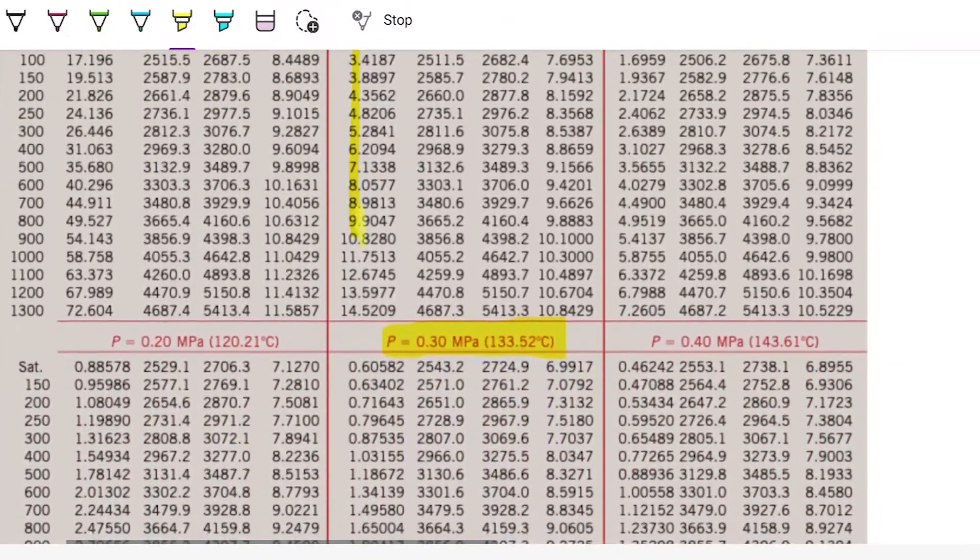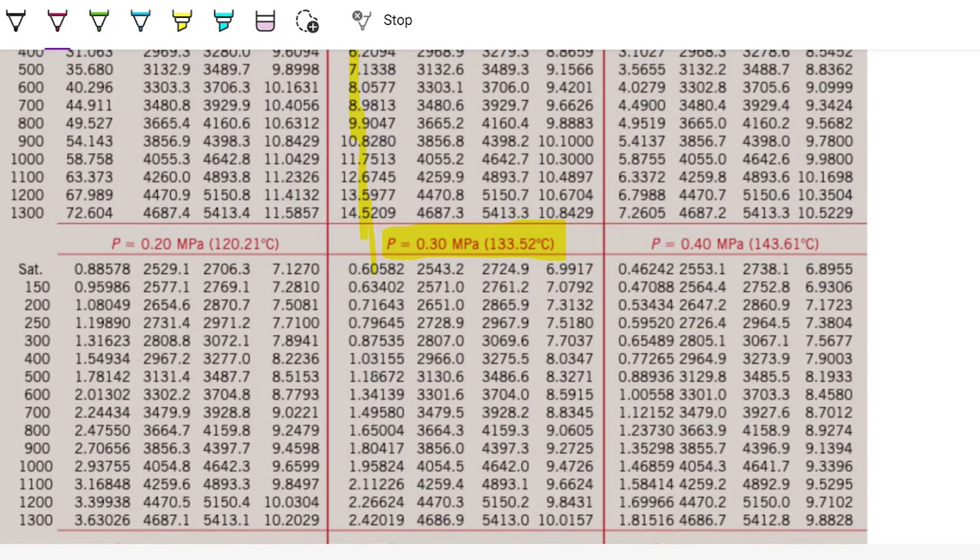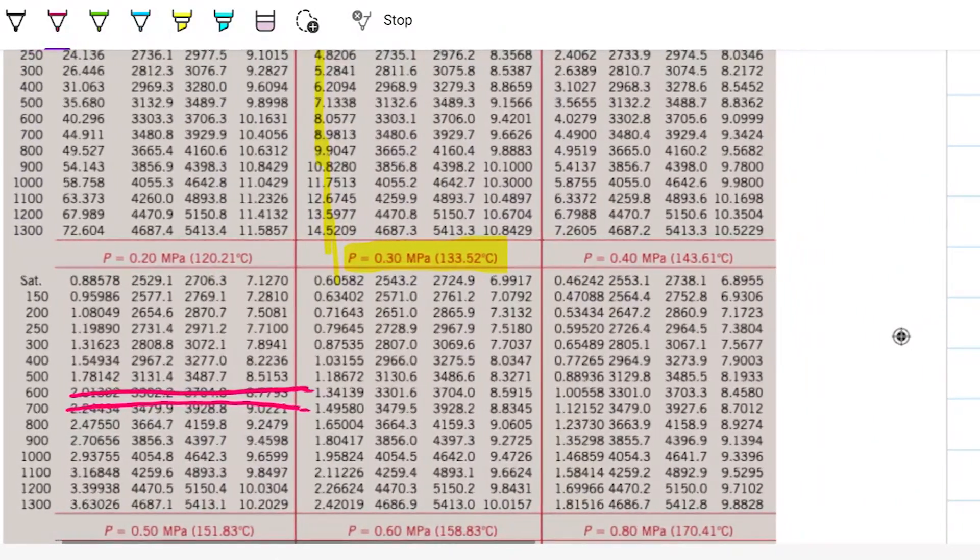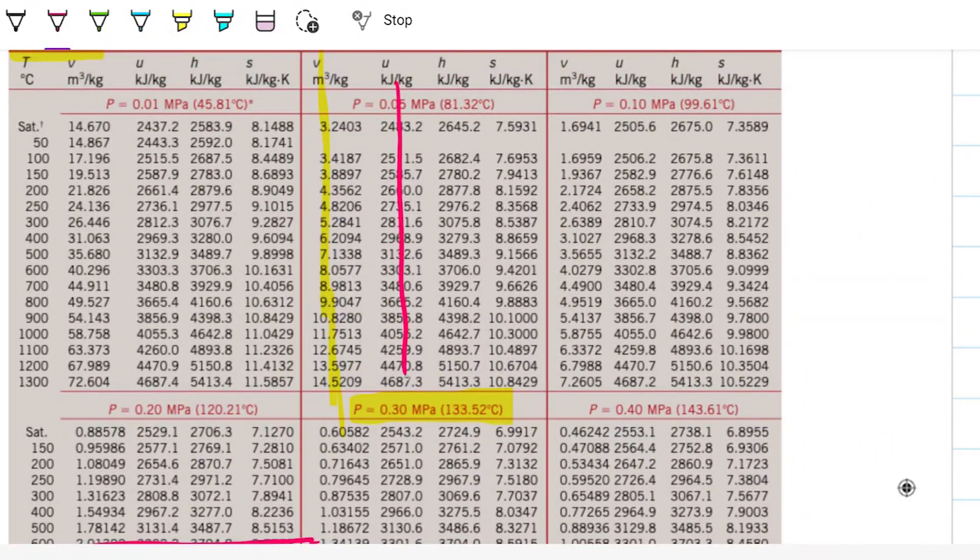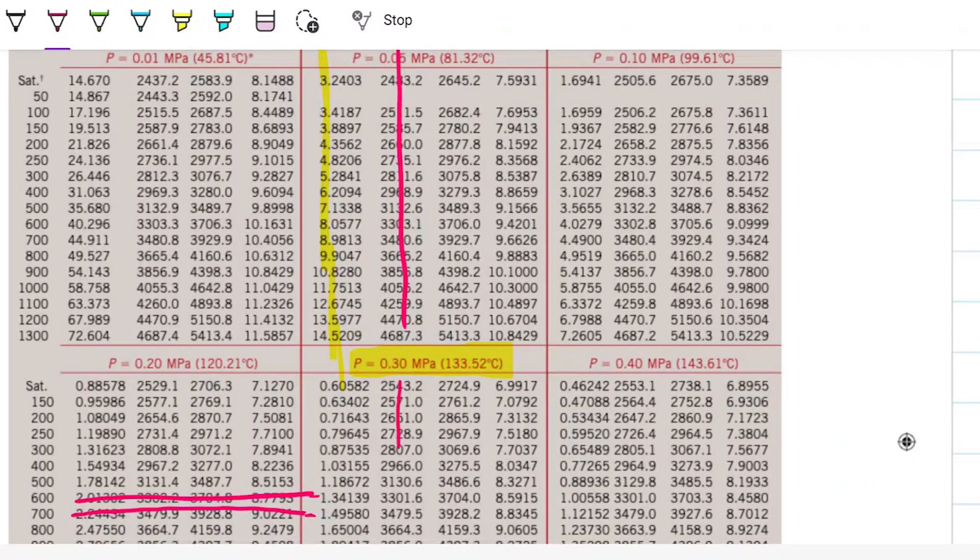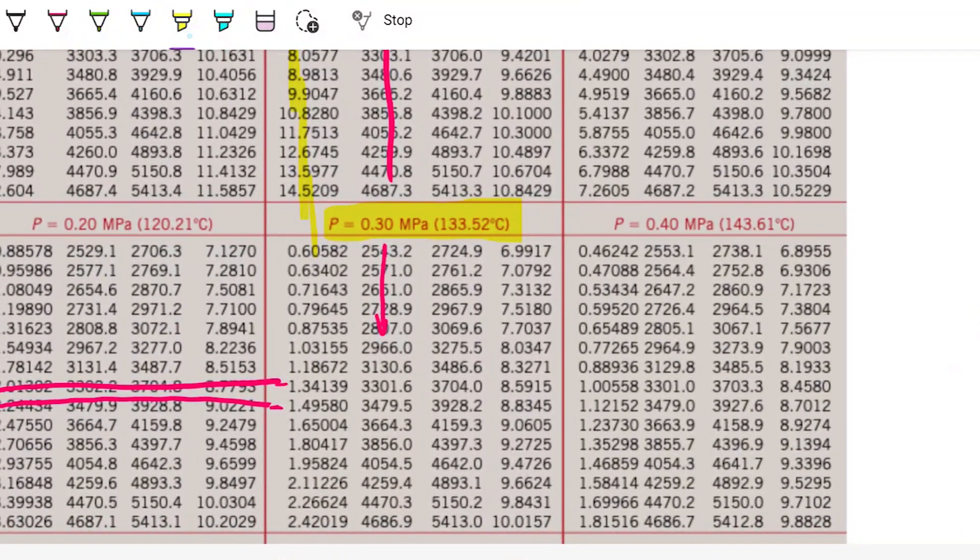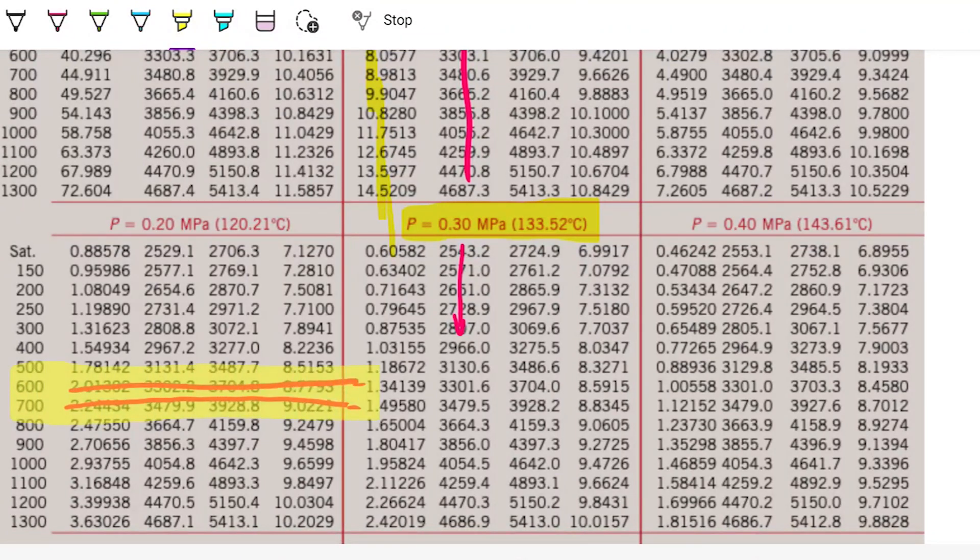So it doesn't matter. We're looking for 300. And we want the specific volume, this column here. We're looking for 1.44. There is 1.49 here and 1.34 there. So our temperature that we're looking for is going to be somewhere between 600 degrees Celsius and 700 degrees Celsius. And to be able to find what the actual temperature is, I need to interpolate.